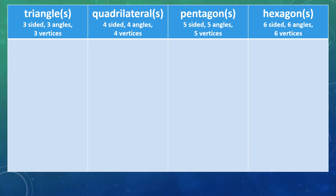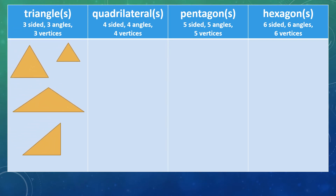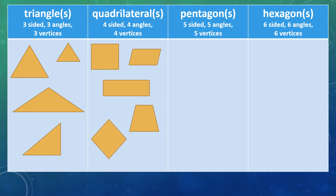Starting with those three-sided, three angles, and three vertices shapes — they are called triangles. The word triangle literally means three angles. The first part of the word, 'tri,' means three, and you can hear the word 'angle' in the name of this shape: triangle. Our four-sided, four-angled, and four-vertice shapes are called quadrilaterals. This word literally means four-sided shape — these shapes are created with four sides.